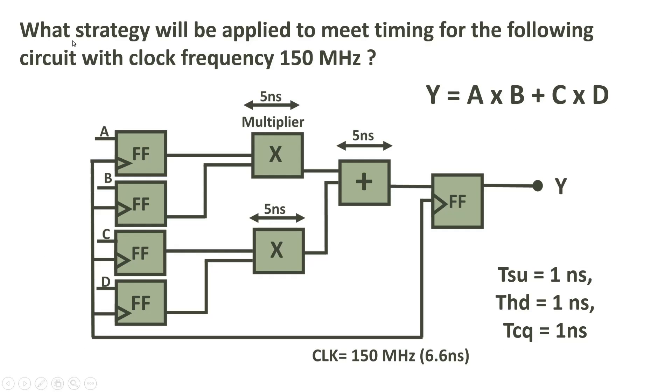Friends, the challenge is given on your screen. Here you have to identify what strategy will be applied to meet the timing for the following circuit. This circuit has to work at clock frequency of 150 MHz. Here Y is output, A, B, C, D are 4 inputs and expression of Y is equal to A into B plus C into D. But this is not a combination logic. Here flip-flops are used. For simplicity, I have considered setup, hold and propagation delay of all the flip-flops used here equal to 1 nanosecond. As the clock frequency is 150 MHz, its period will be approximately 6.6 nanoseconds.